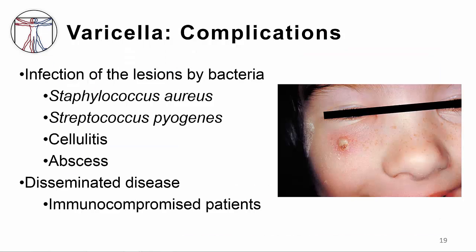Bacterial superinfection of some vesicles — due to scratching and trauma — is the most common complication of VZV infection. Staphylococcus aureus and Streptococcus pyogenes are the most common organisms causing this problem. Primary infection in older patients, mainly adolescents and adults, is more severe due to the immune response of cytotoxic T cells with resultant tissue damage. Primary infection in immunocompromised patients is more severe due to lack of T cells.